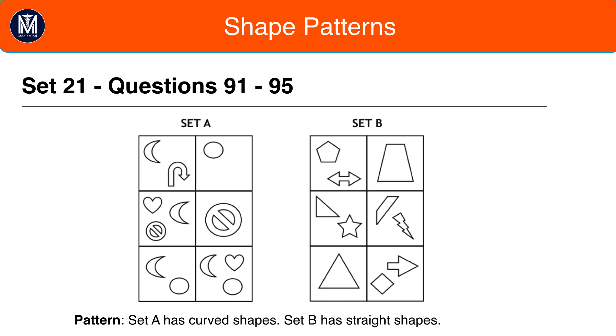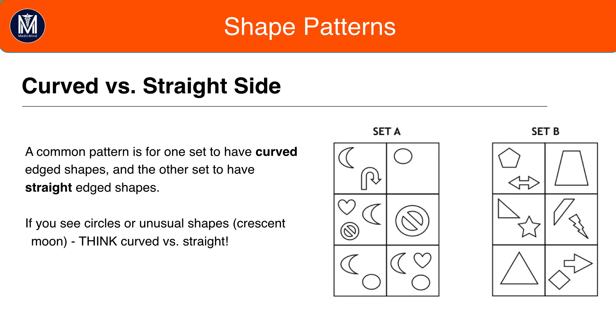The pattern here is that set A has curved shapes and set B has straight shapes. If you think back from Lesson 6, Abstract Reasoning Triggers, we said that if you see crescent moons or circles, think of curved shapes.